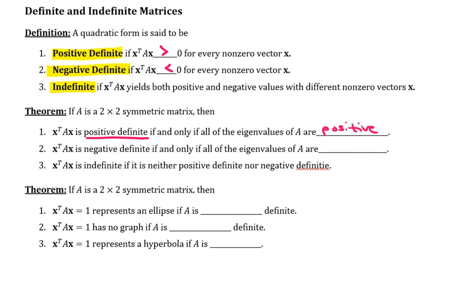X transpose AX is negative definite if and only if all the eigenvalues of A are, you probably guessed it, negative. The quadratic form X transpose AX is indefinite if it is neither positive definite nor negative definite.